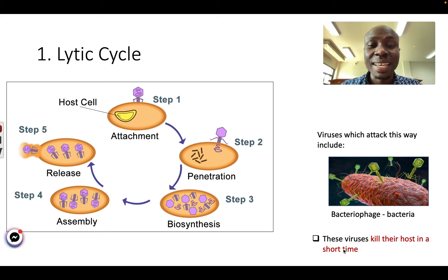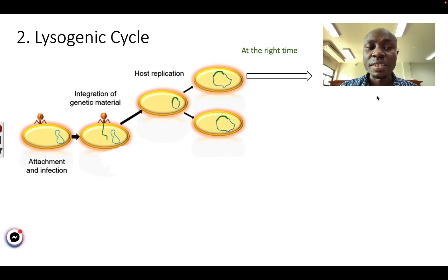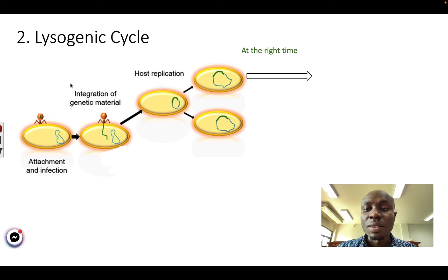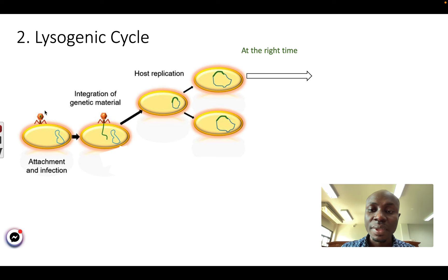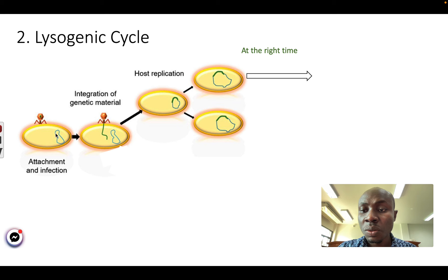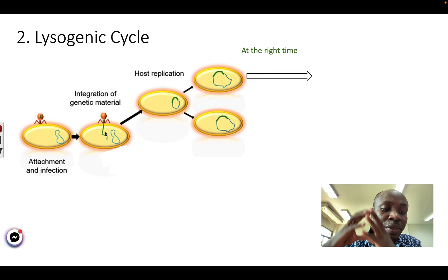Some viruses will use a second method. We call this the lysogenic cycle. In step one, the virus will attach to the host cell, just like in the lytic cycle. Step two: the virus will again put the DNA or RNA inside the host cell. But in step three, the DNA or RNA from the virus will join together with the DNA of the host cell. The green one from the virus will join together with the blue DNA of the host cell.